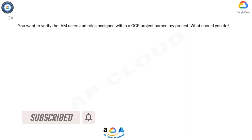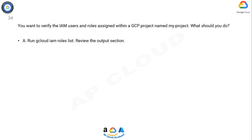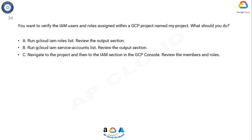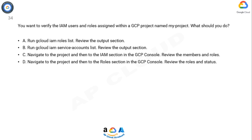Question: you want to verify the IAM users and roles assigned within a GCP project named 'my-project'. What should you do? Option A: run gcloud iam roles list, review the output. Option B: run gcloud iam service accounts list, review the output. Option C: navigate to the project and then to the IAM section in the GCP console, review the members and roles. Option D: navigate to the project and then to the roles section in the GCP console, review the roles and status. Now take 10 seconds to think about the answer.